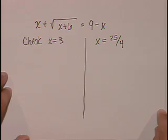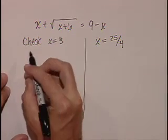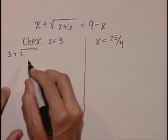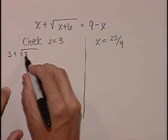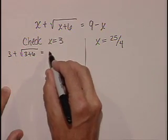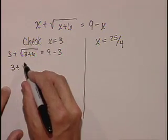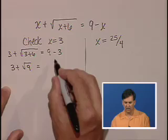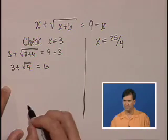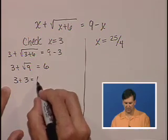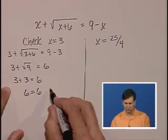So let's check x equals 3 first, since the arithmetic is a little easier. 3 plus the square root of 3 plus 6 is equal to 9 minus 3. So 3 plus the square root of 9 on the left-hand side, and the right-hand side is just 6. We have 3 plus 3 equals 6. So we have 6 equals 6, which is true.